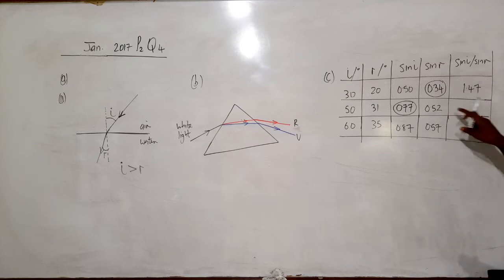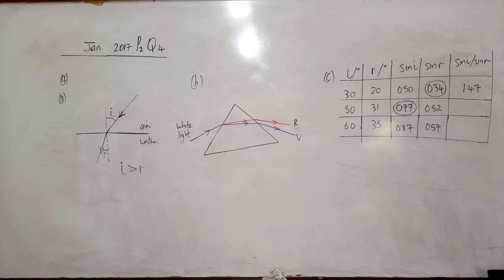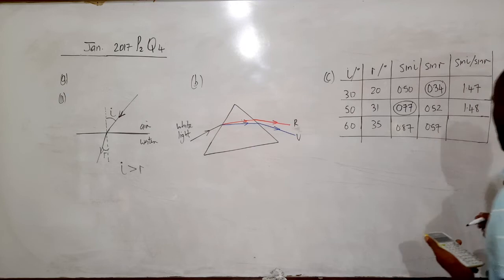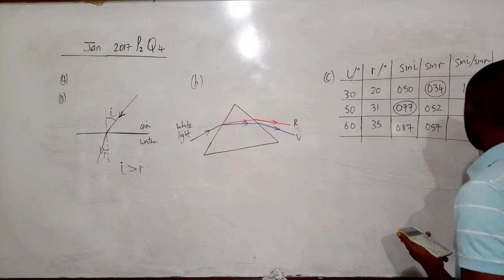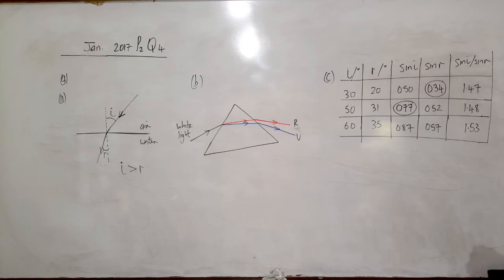Calculating sine i divided by sine r: 0.77 divided by 0.52 gives 1.48. And 0.87 divided by 0.57 gives 1.53. The ratios of sine i over sine r are not exactly the same but they are pretty close, which is consistent with Snell's law.